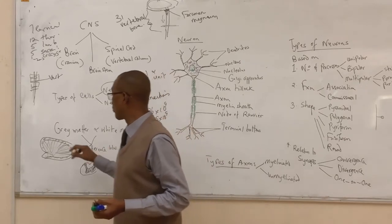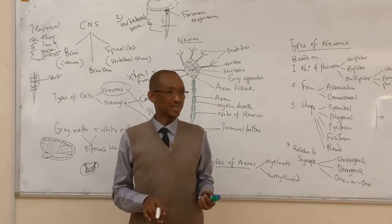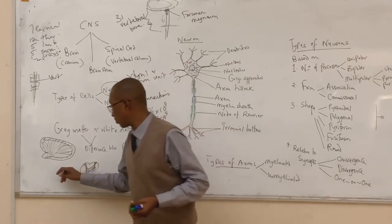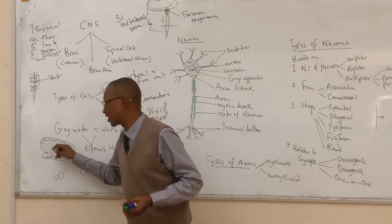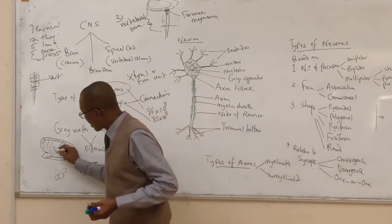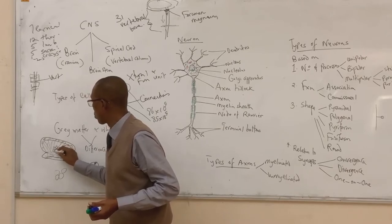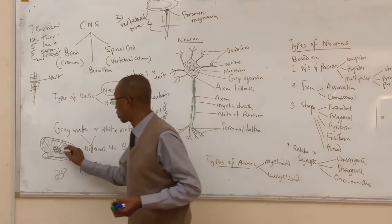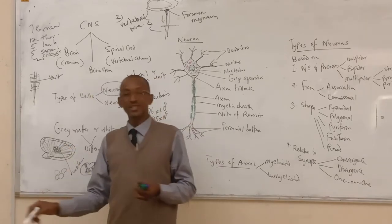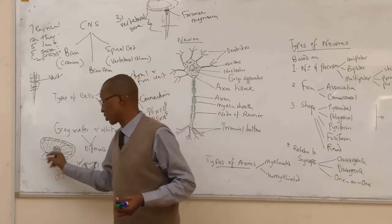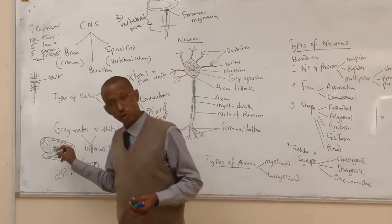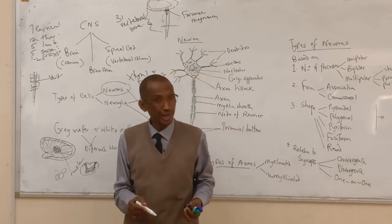Apart from the cortical gray matter, we also have aggregations of cell bodies within the white matter of the cerebral hemisphere or cerebellum — these are called a nucleus. If this aggregation of cell bodies occurs outside the central nervous system, such as in the dorsal root ganglia, that is what we call a ganglion, with the plural being ganglia.